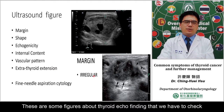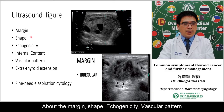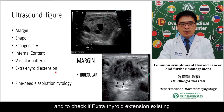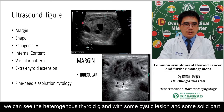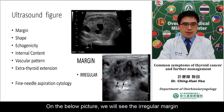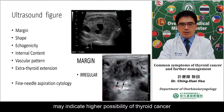These are some features of the thyroid ultrasound echo findings. You have to check the margin, shape, and echogenicity, the vascular pattern, and whether extra-thyroid extension exists. In the upper picture, we see thyroid tissue with a heterogeneous lesion, some cystic and some solid parts. In the lower picture, we see an irregular margin, which suggests a higher possibility of cancer.